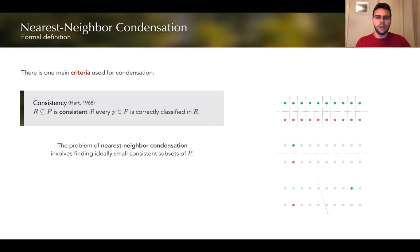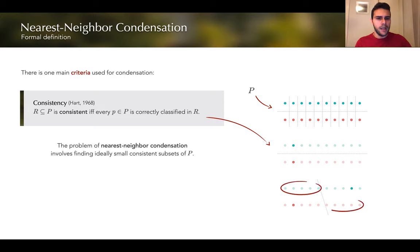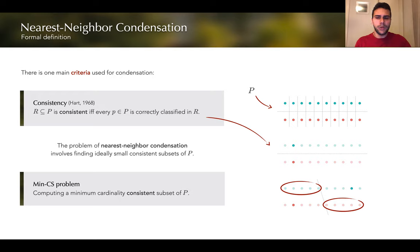There's one main criteria for condensation which is called consistency. We say that a subset R is consistent if all the points in the original training set are correctly classified in the reduced set R. If this is our initial training set, this would be an example of a consistent subset, and this is an example of a subset that is not consistent because there's a set of blue points which are closer to the selected red point and vice versa. Additionally, we can define the corresponding optimization problem for finding consistent subsets of minimum cardinality, which is called min CS, and this is known to be an NP-hard problem.